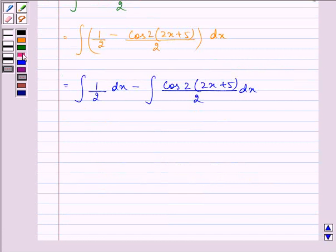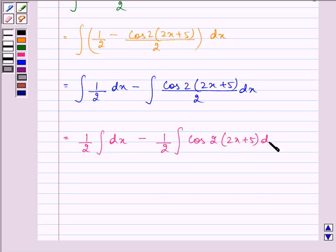Here the constant will come out of the integral and we have integral of dx minus 1 by 2 integral of cos 2, 2x plus 5 dx.